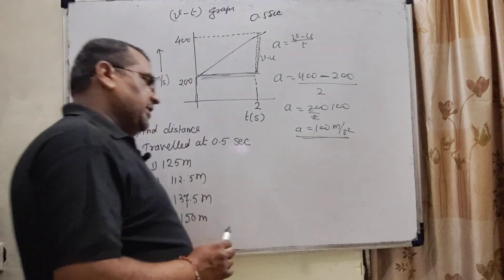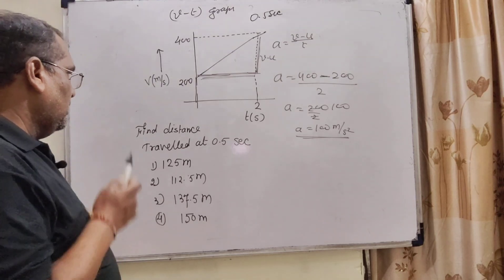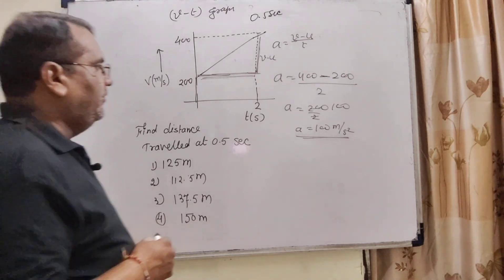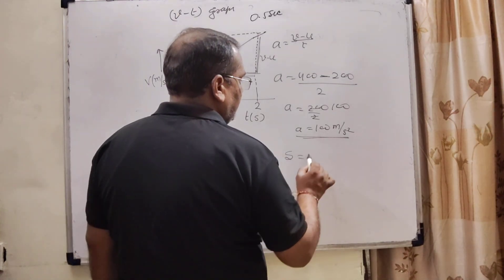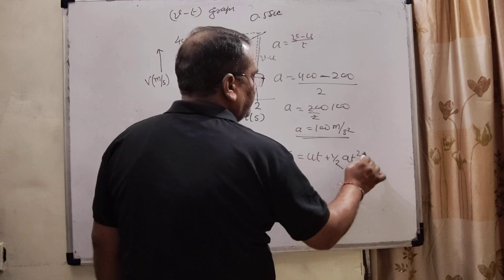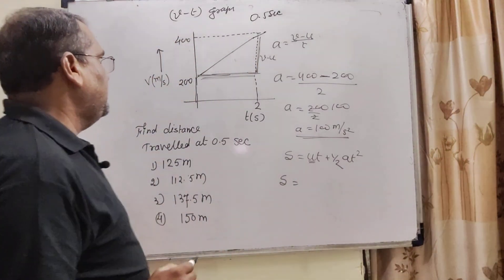So here, we get acceleration. And here we have to calculate distance covered at 0.5 second. Then we have to use the formula. S is equal to UT plus half AT square. So here, U, initial velocity is 200.